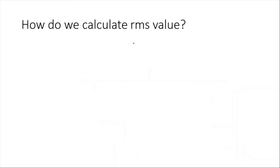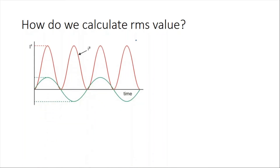How do we calculate the root mean square value? Look at the current as a sine function with time. The average value of this function is zero because all positive values and all negative values cancel each other out over each cycle.